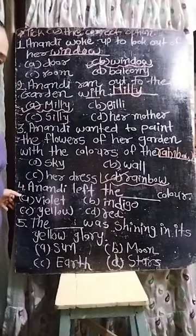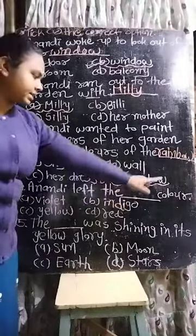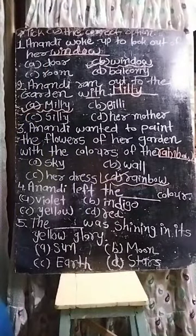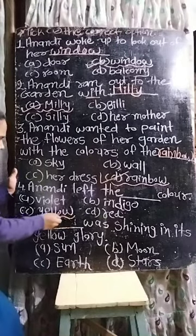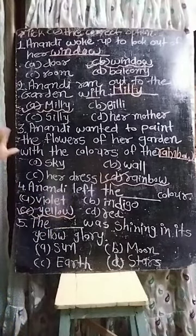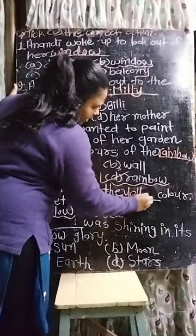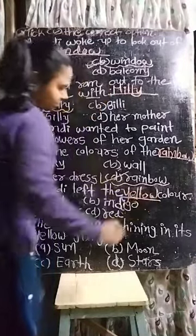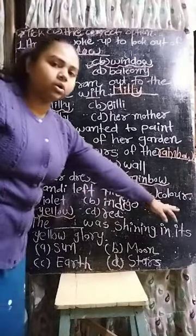Fourth one: Anandi left the blank color. Anandi ne kaunsa color chhod diya? Violet, indigo, yellow, or red? The answer is yellow color. Usne suraj ke liye rehne diya tha. Write down the answer: yellow. Anandi left the yellow color.